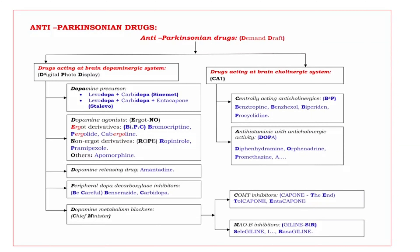First let us discuss what is Parkinson's disease. It is caused by the degeneration of dopamine-containing neurons in substantia nigra, thereby impairing the extrapyramidal motor activity, resulting in rigidity, tremors, bradykinesia, and loss of postural reflexes.